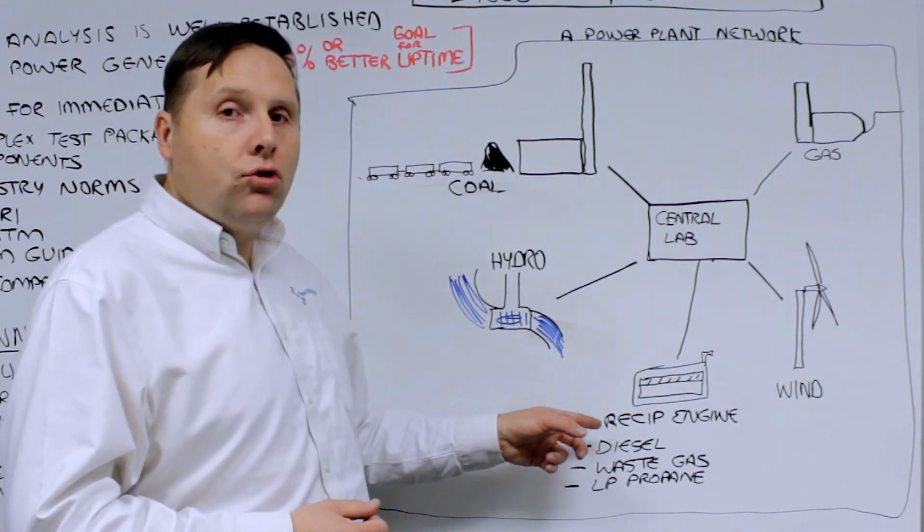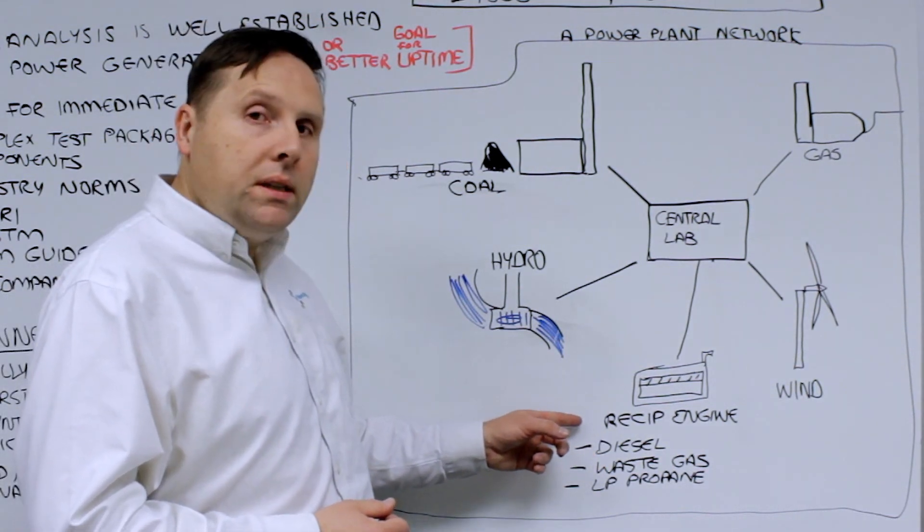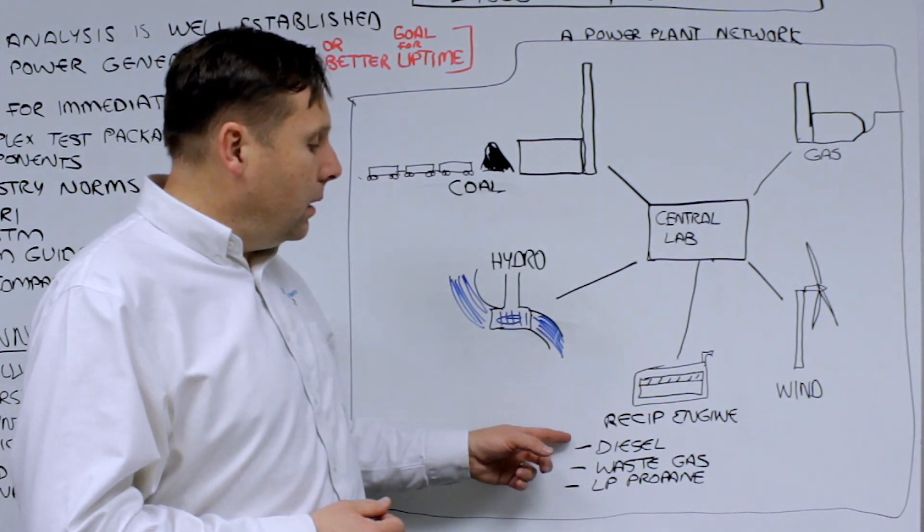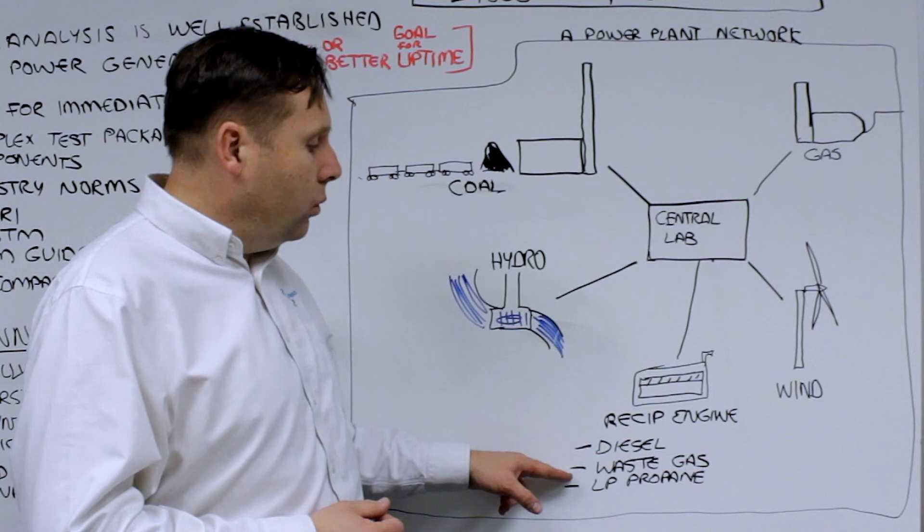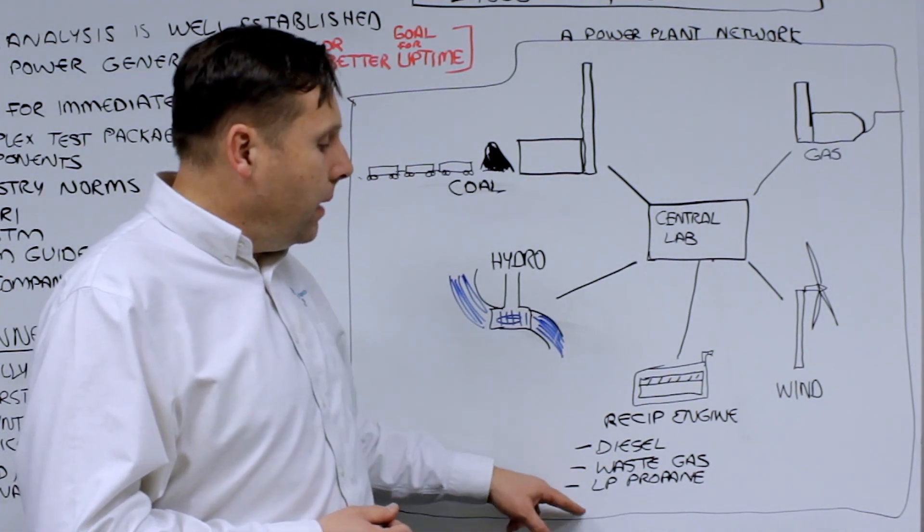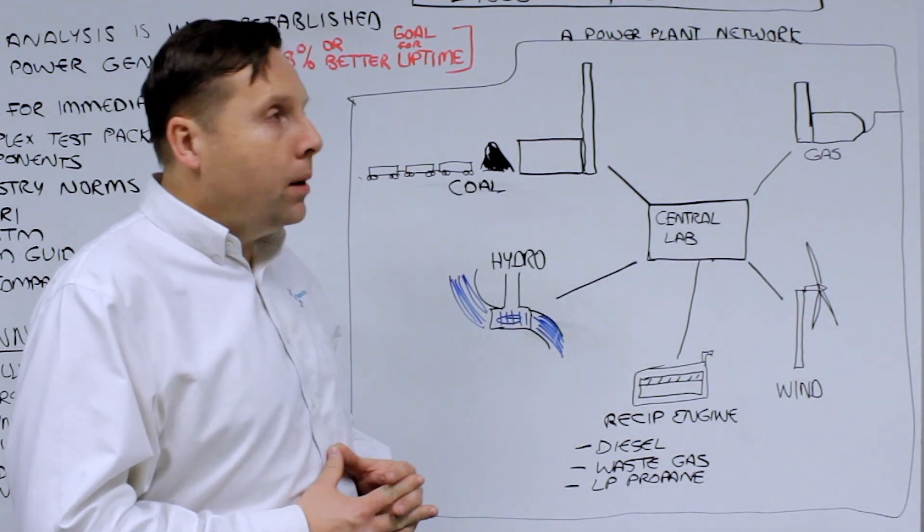And you might also have distributed generation in the form of re-sips that could be operated as diesel or waste gas for waste disposal or dumps or backup, emergency backup on propane.